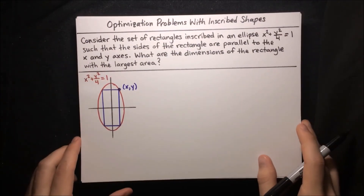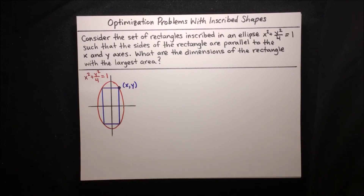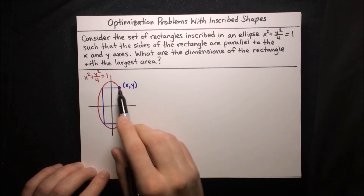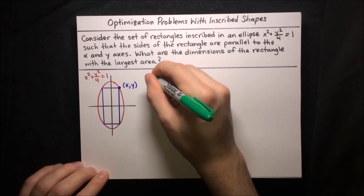Here's our next problem. We want to consider the set of rectangles inscribed in an ellipse x squared plus y squared over 4 equals 1, such that the sides of the rectangle are parallel to the x and y axes. We want to know what are the dimensions of the rectangle with the largest area. We've got a diagram of our ellipse and a rectangle inscribed within it, and we'll say the corner point of the rectangle in the first quadrant is (x, y).